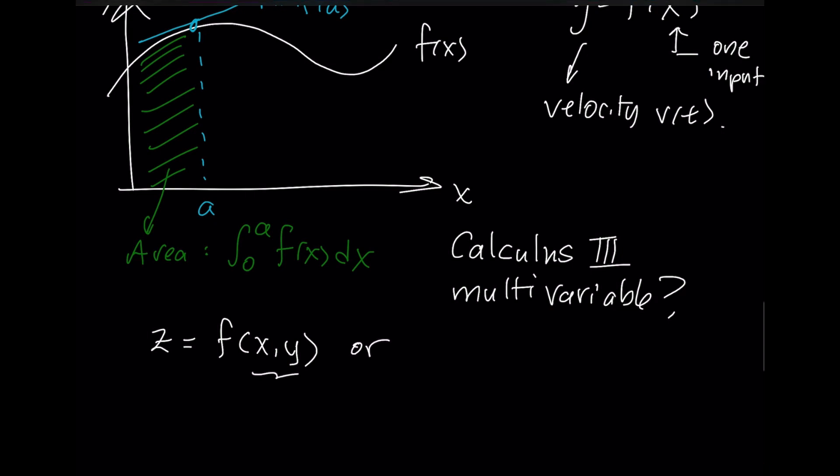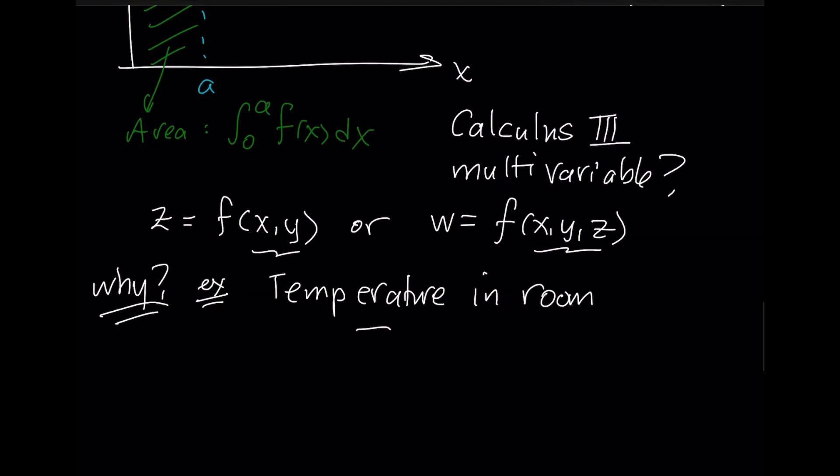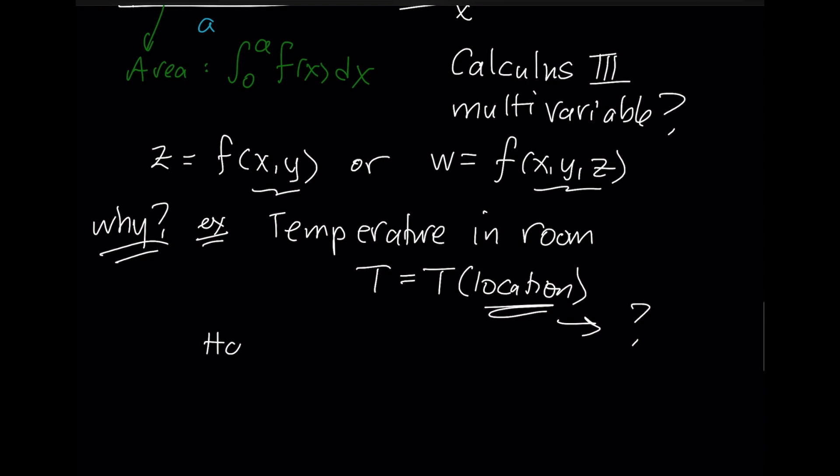Multivariable calculus allows you to study functions that have more than one input. For example, you could have two inputs into your function and then spit something else out called z, or you might want to have f of x, y, and z. As a simple example, let's say you're interested in the temperature in a room. The temperature is going to depend on the location in your room. And how do we describe locations in 3D space?